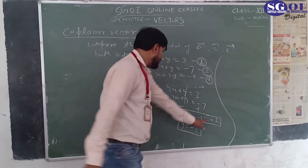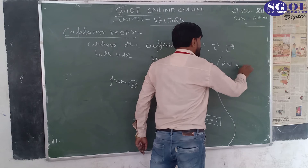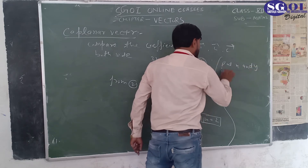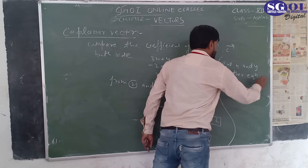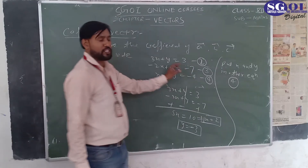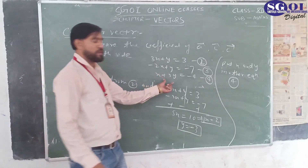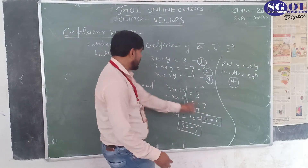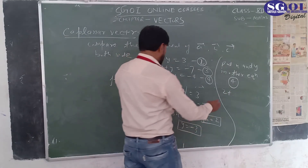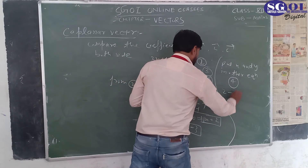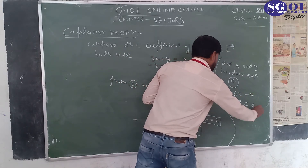Now we put the values of x and y into the third expression to verify. Substituting x equals 2 and y equals minus 3: we compute 2 plus 2 times minus 3, which gives 2 minus 6, and this equals minus 4. This satisfies the third equation, confirming the vectors are co-planar.